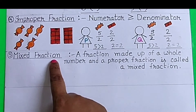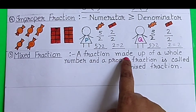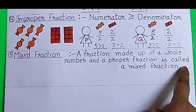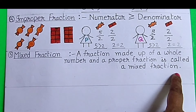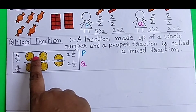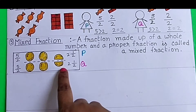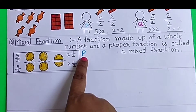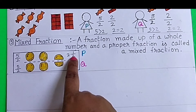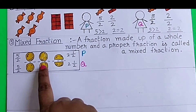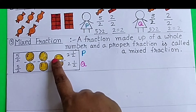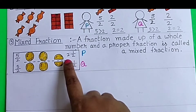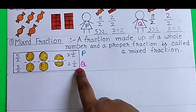Mixed Fraction: A fraction made up of a whole number and a proper fraction is called a mixed fraction. For example, there are 5 cookies. If we divide these 5 cookies between P and Q, then each will get 2 whole cookies and a half portion of cookie. So we can represent it as 2 and a half using fractions. This kind of fractions are called mixed fractions.